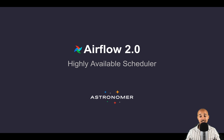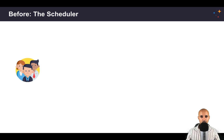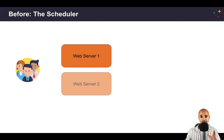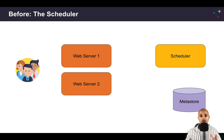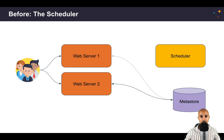Before moving forward, let me show you how it was with Airflow 1.10.x. Let's say you are running Airflow in production. A typical architecture might have two web servers, an instance corresponding to the metastore, and one instance corresponding to the scheduler. When you trigger your data pipelines, some requests will be sent to the metastore and some others to the scheduler.